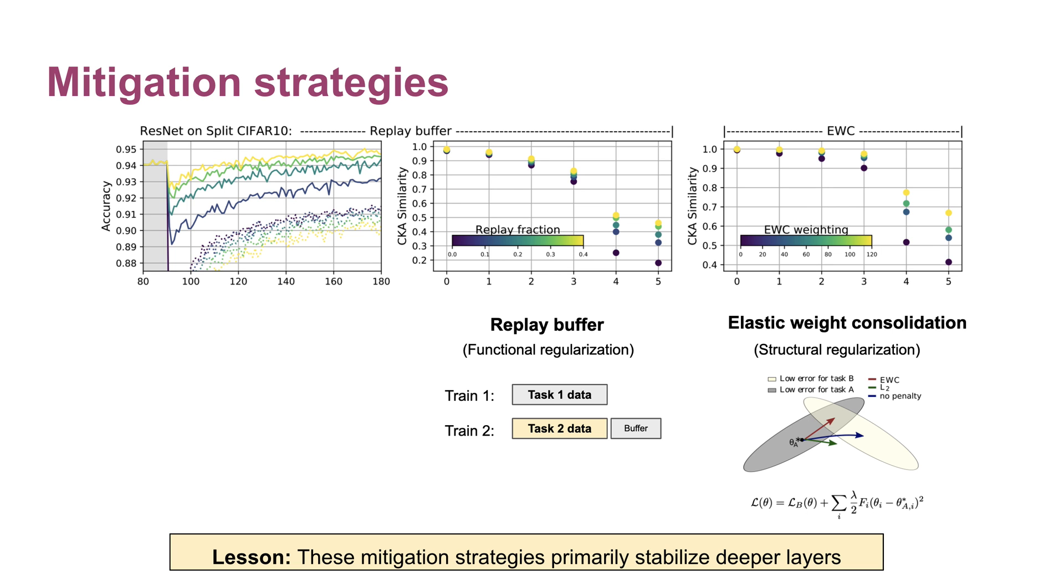We wanted to see what happened to the internal representations when we tried to combat forgetting by using two popular mitigation methods: one, a replay buffer, and two, EWC or elastic weight consolidation. These results shown here for ResNet show that as we increase either the size of the replay buffer or the strength of the EWC penalty, the primary effect on internal representations is the deeper layers are stabilized the most by both methods.